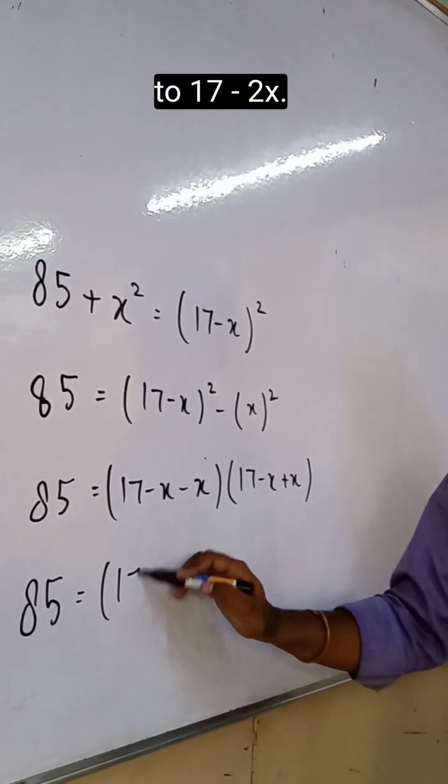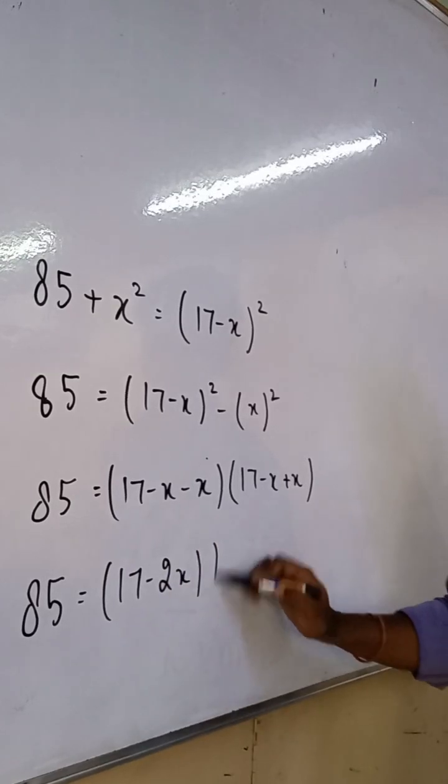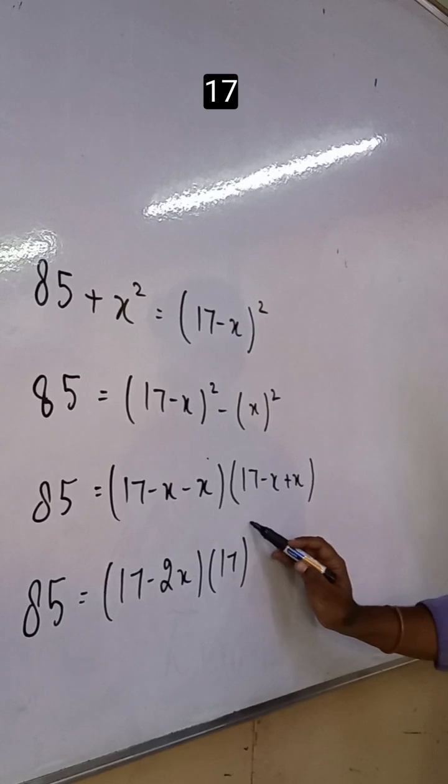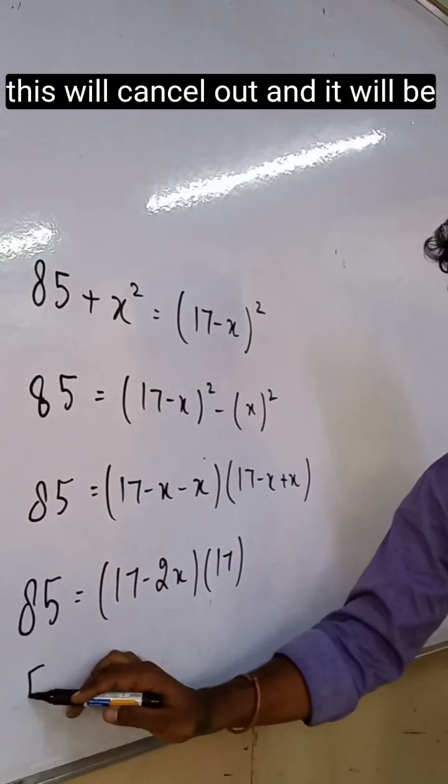85 equals 17 minus 2x. And this bracket will give you 17. This will cancel out and it will be 5.